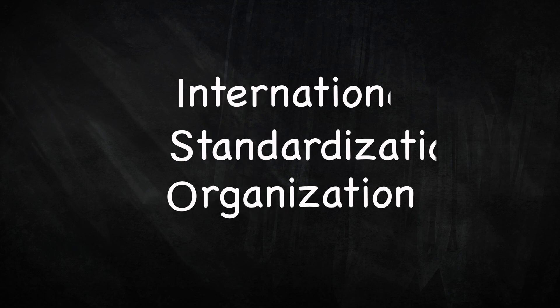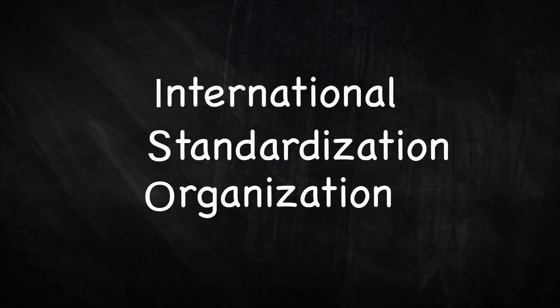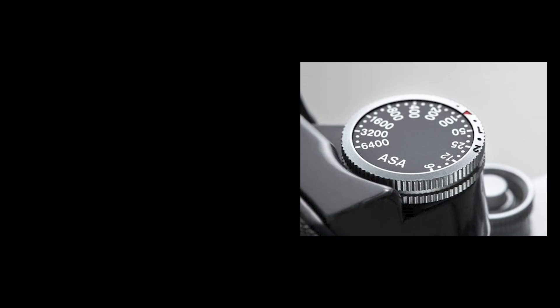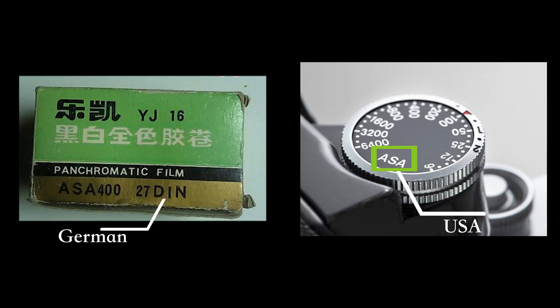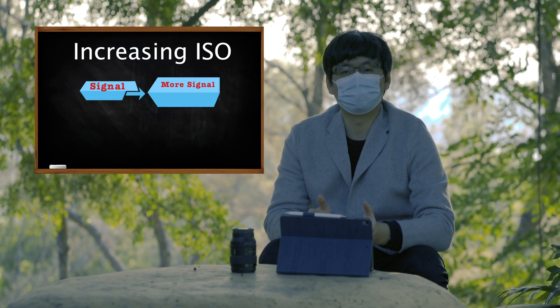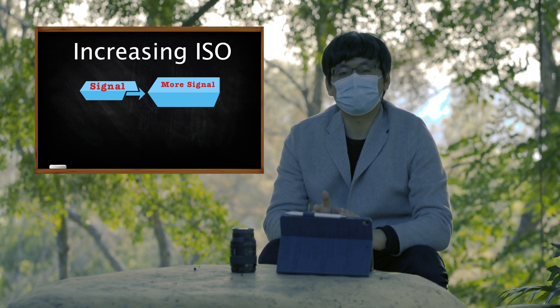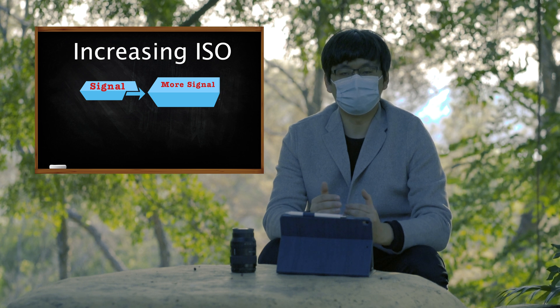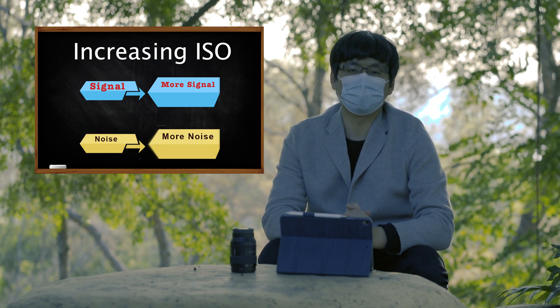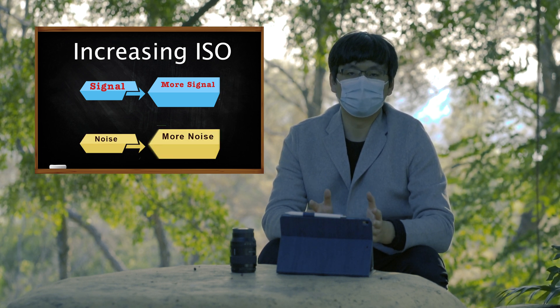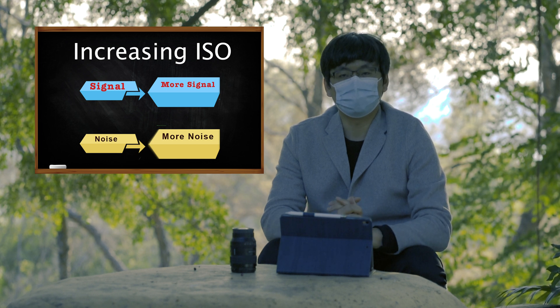We all know ISO stands for a universal standard of light sensitivity. In old days, we called them ASA or DIN on films, depending which standard you're using. Basically, we can simplify ISO as an amplifier that boosts the signal strength which our camera captured. The trick part is, whenever you increase ISO, not only the signal strength but also the noise gets amplified — fair and equal. So whenever you take high ISO pictures that come with a huge amount of noise, let's be fair — those noises were already there before you increased the ISO value.